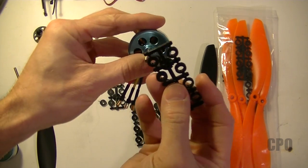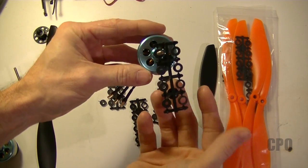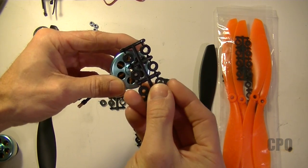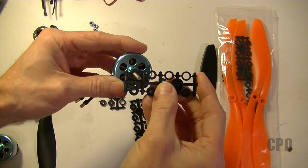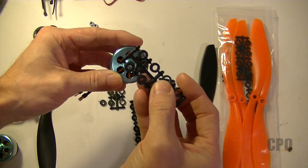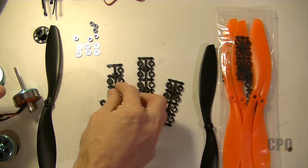Each prop comes with a set of prop adapters that are designed to fit exactly around the motor shaft that you're working with. So just like Goldilocks and the Three Bears, one will be too small, one will be too large, and then one of them will be just right. That's the one you want to use.